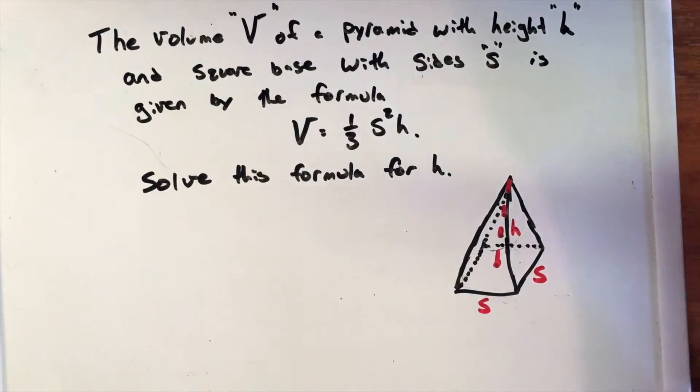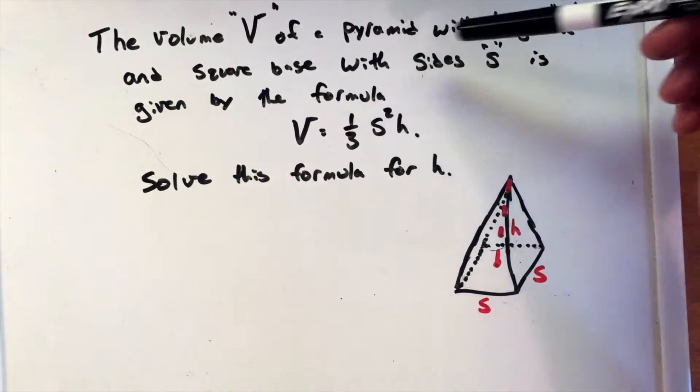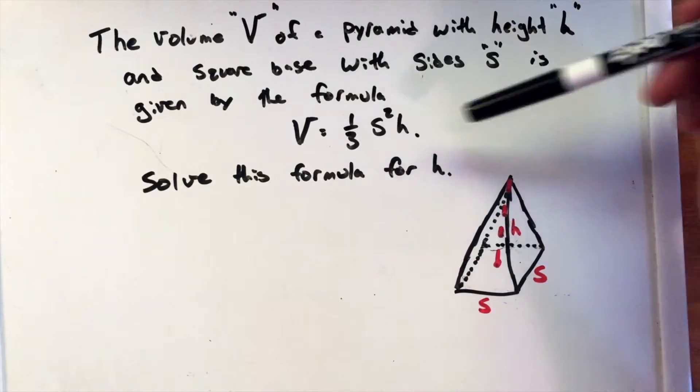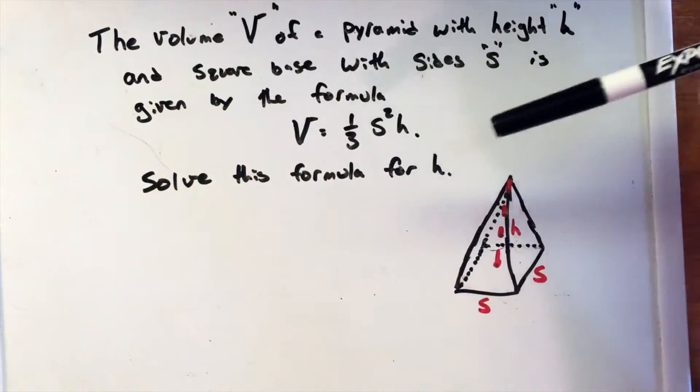For this problem, we're given the volume V of a pyramid with height h and a square base with sides s is given by the formula V = (1/3)s²h. We want to solve this formula for h.